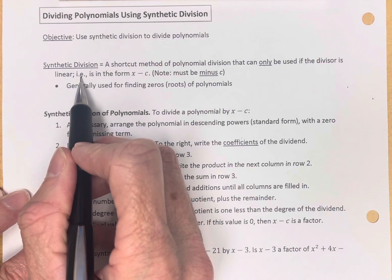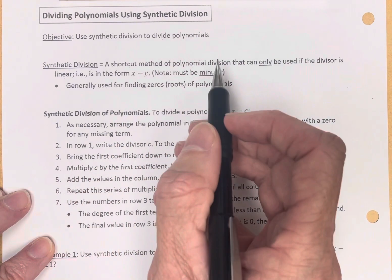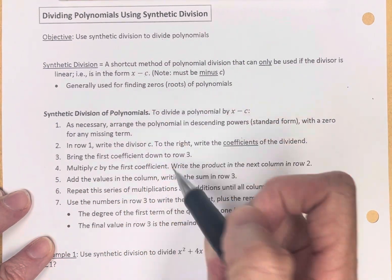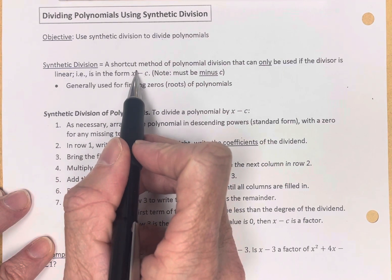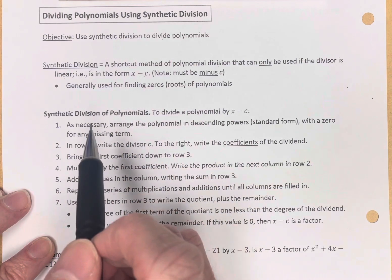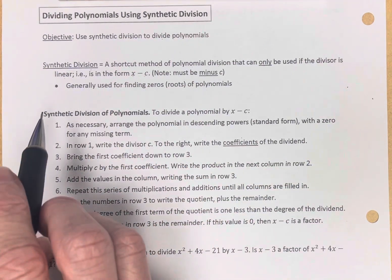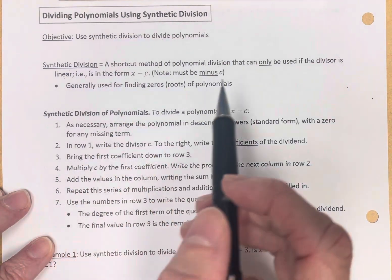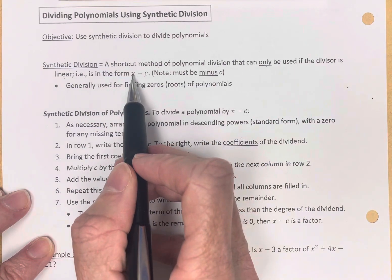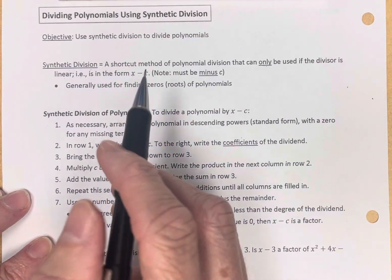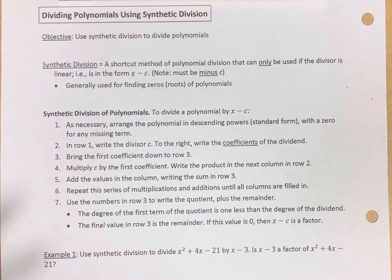In other words, if the divisor is in the form x minus c — and I want to note the minus c here. So this is linear because the leading exponent is 1, x to the 1, meaning it's a linear divisor. It's an interesting method, used only if you're dividing by an x minus a number. It is generally used for finding the zeros or the roots of polynomials.